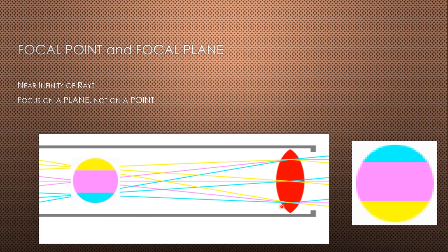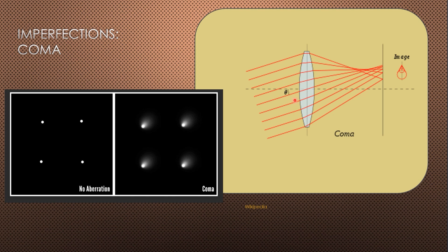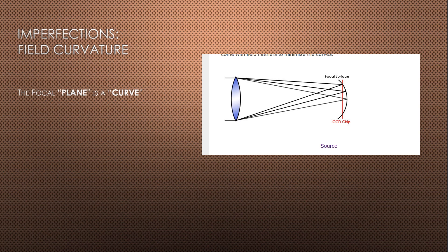It gets a little more complicated because life is not perfect. One limitation is spherical aberration: the rays of light do not actually meet at a single point but over an area, making stars bigger than they should be. Another imperfection is coma, particularly a problem in fast Newtonians, where stars appear slightly off-center. One of the most frequent problems with almost any optic is field curvature — the focal plane is curved rather than flat.